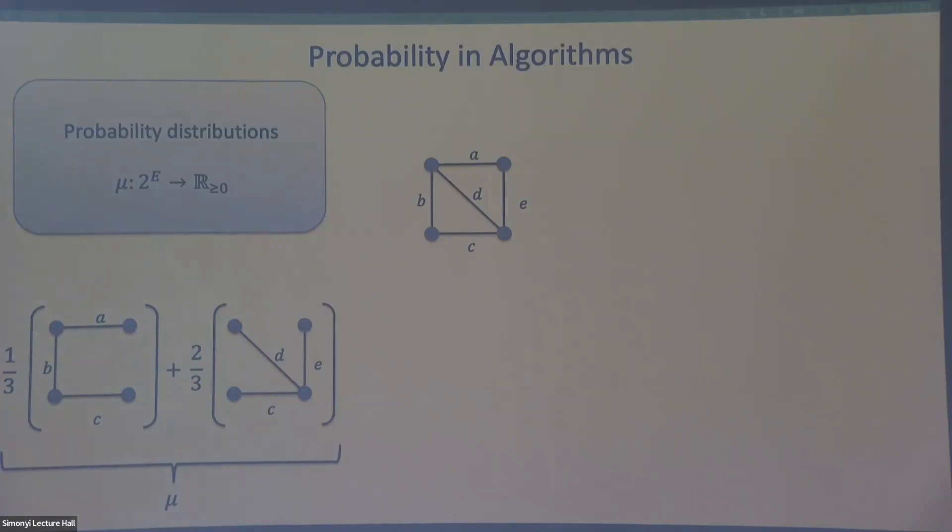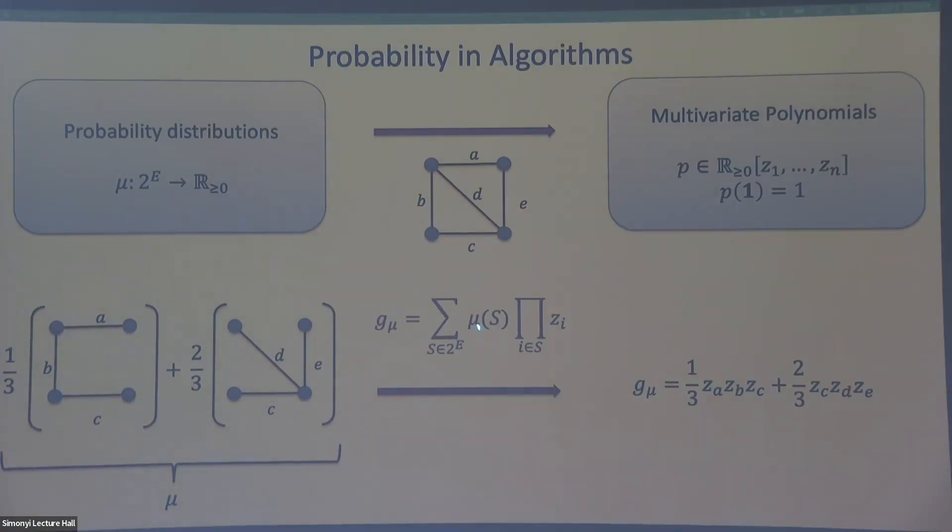So they can often be a bit tricky to analyze, and this is why we turn to polynomials. You can associate every probability distribution with some multivariate polynomial. And you can see how to do this just in this example. So the generating polynomial of mu is just one-third times ZA, ZB, ZC, plus two-thirds times ZC, ZD, ZE, right? So you can kind of guess what the general thing is here. I just sum over all the sets, and I multiply their probability times the product of the ZI for every I in this set. So in this case, I've made a variable for every edge of the graph, right? This allows me to now translate questions about probability into questions about polynomials.